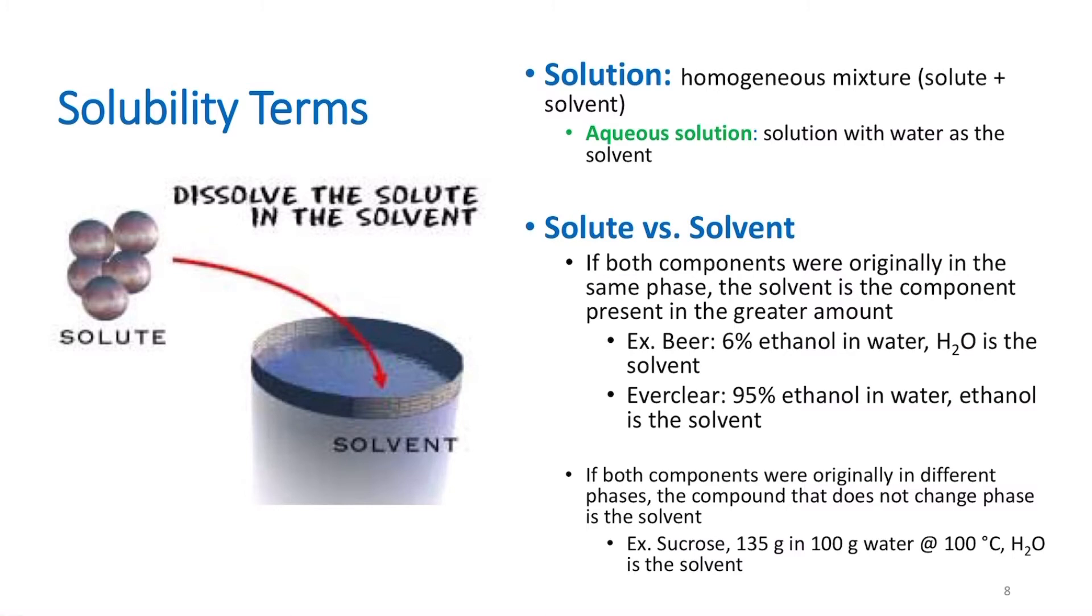What do we mean by solute versus solvent? This is a little tricky. If both components were originally in the same phase, the solvent is the component present in greater amount. For example, beer. If I have a beer that is a 6% ethanol content, 6% ethanol in water, that means there's 6% ethanol, 94% water. Water is present in the greater amount. Therefore, water is my solvent. Ethanol and water are both liquids at room temperature. Everclear, however, has a 95% ethanol content, meaning that it only has a 5% water content. In this case, ethanol is my solvent because it's present in the greater amount and both substances were originally in the same phase.